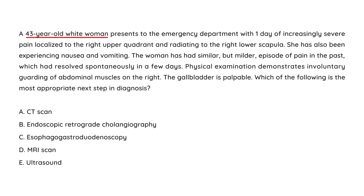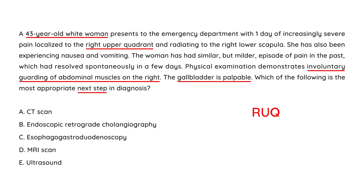Second vignette: A 43-year-old white woman presents with one day of increasingly severe pain in the right upper quadrant radiating to the right lower scapula, with nausea and vomiting. She has had similar but milder episodes in the past that resolved spontaneously. Physical exam shows involuntary right-sided guarding and a palpable gallbladder. The most appropriate next step is an ultrasound.